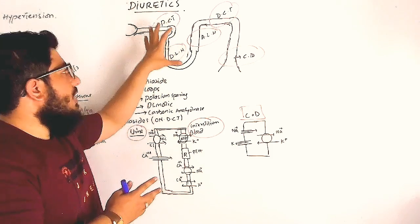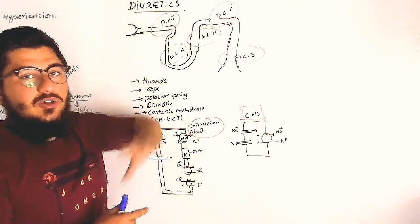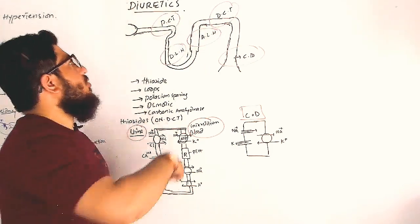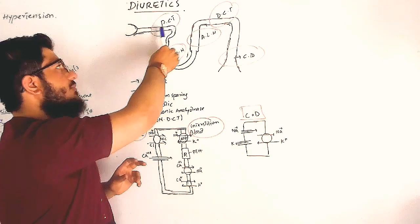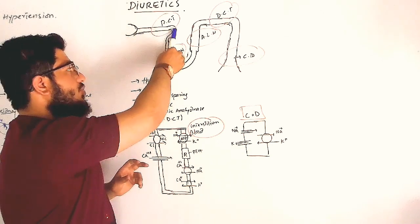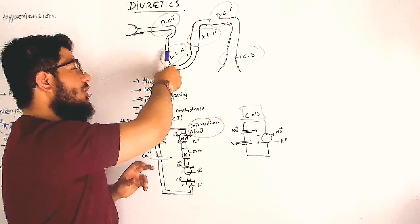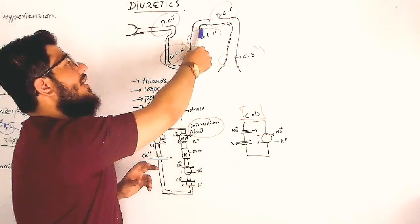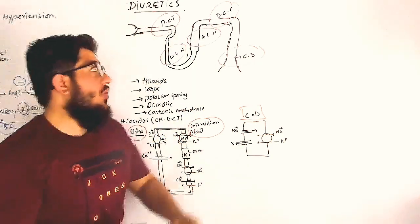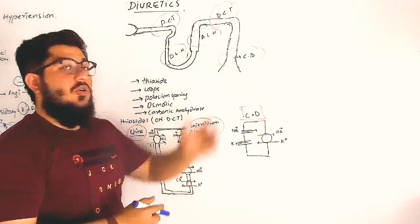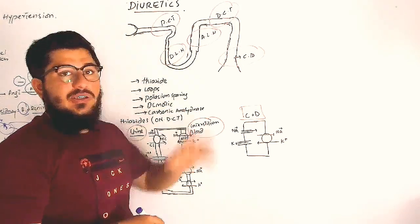First of all, the nephron is an important organ. There are some parts of it: glomerulus and proximal convoluted tubule, descending loop of Henle, ascending loop of Henle, distal convoluted tubule, and collecting duct.